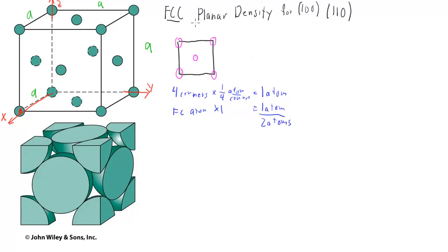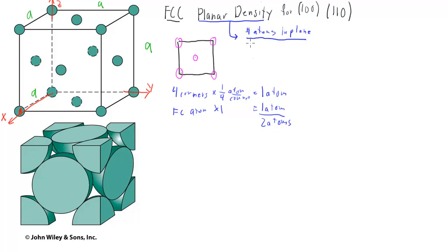Planar density is defined as the number of atoms in a plane divided by the area of that plane. These are atoms that have their centers in the plane — any atom whose center is not in the plane doesn't count. As long as the center of the atom is in the plane, we're good; if it's a little above or below, it doesn't count.